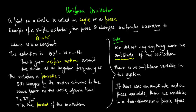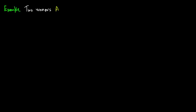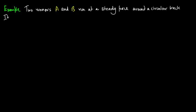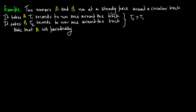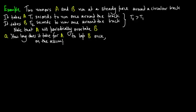Now let us consider an example of two runners, A and B, who run at a steady pace around a circular track. It takes A, T1 seconds to run once around the track. We assume that T2 is greater than T1, so note that A will in fact periodically overtake B. The question is: how long does it take for A to lap B once, on the assumption that they both start together?